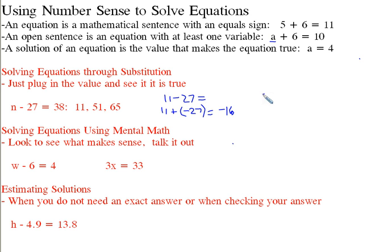Now we try the next one: 51. Is 51 - 27 equal to 38? Let's see. 51 - 27 is actually 24. So that's not going to work, that's not correct. We know this is not a solution.